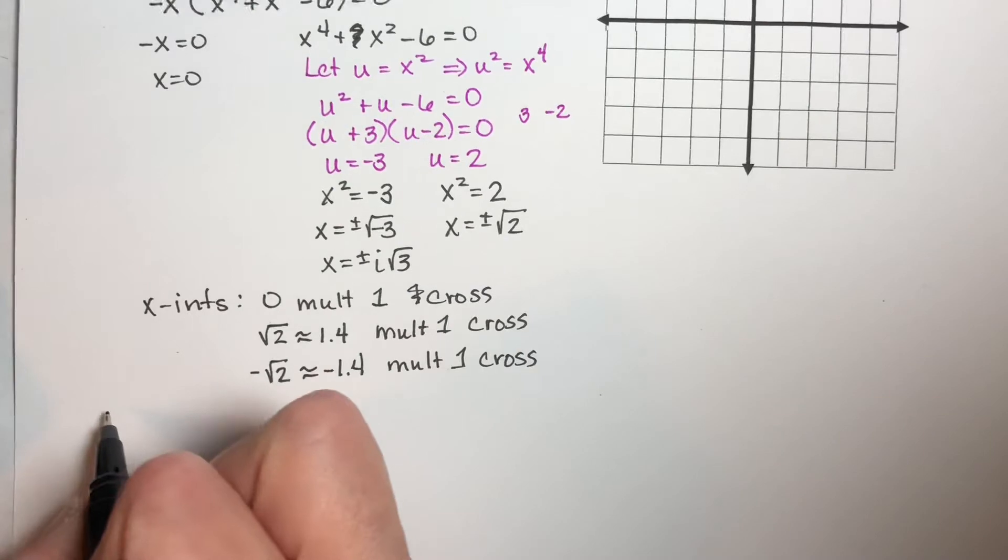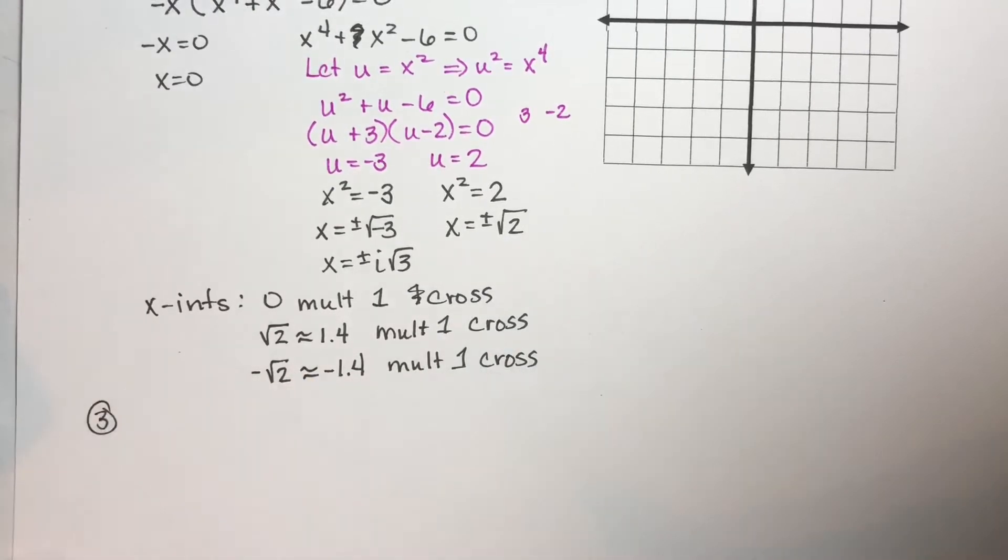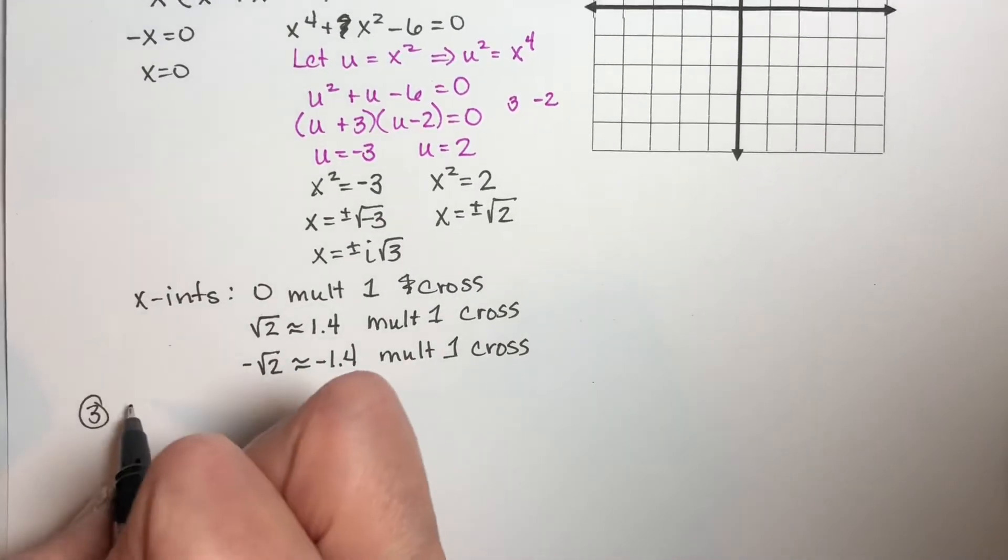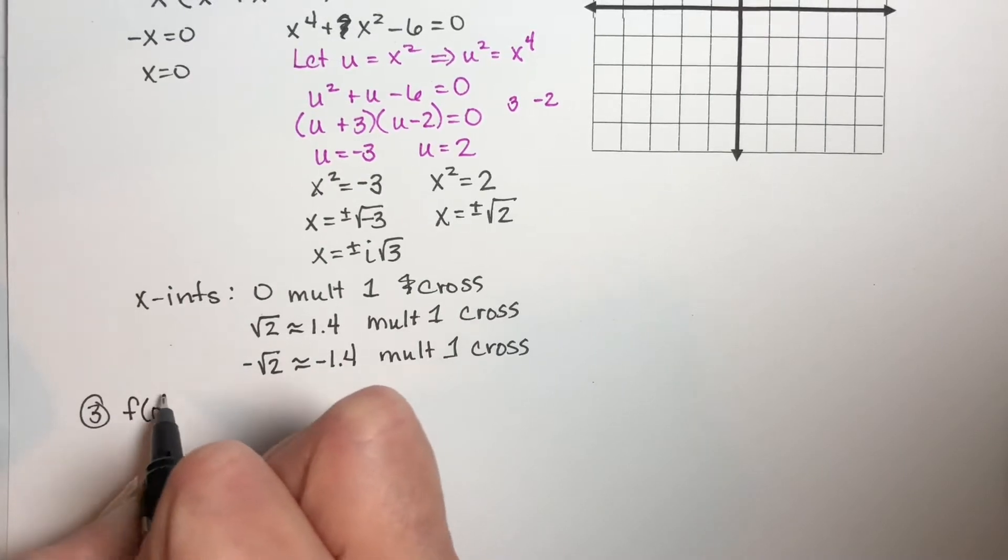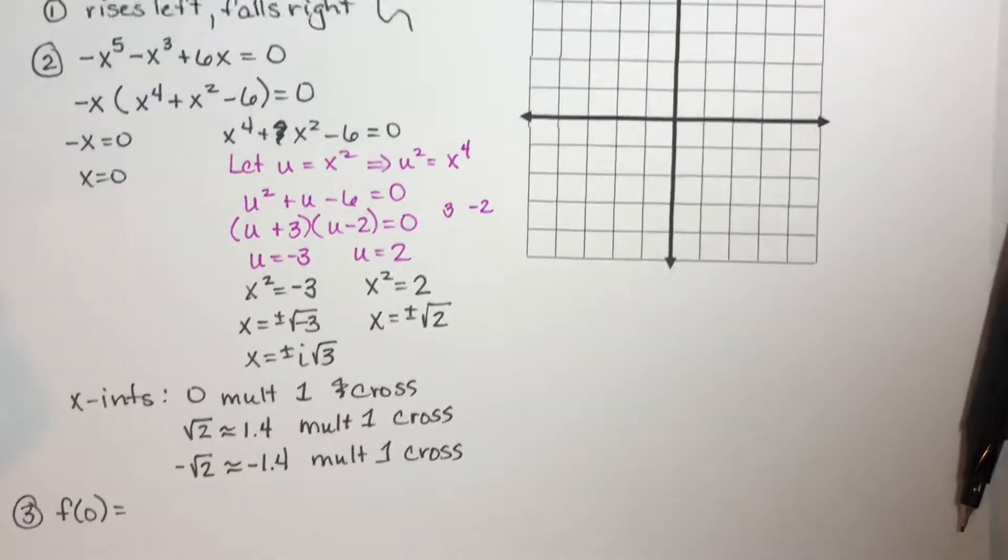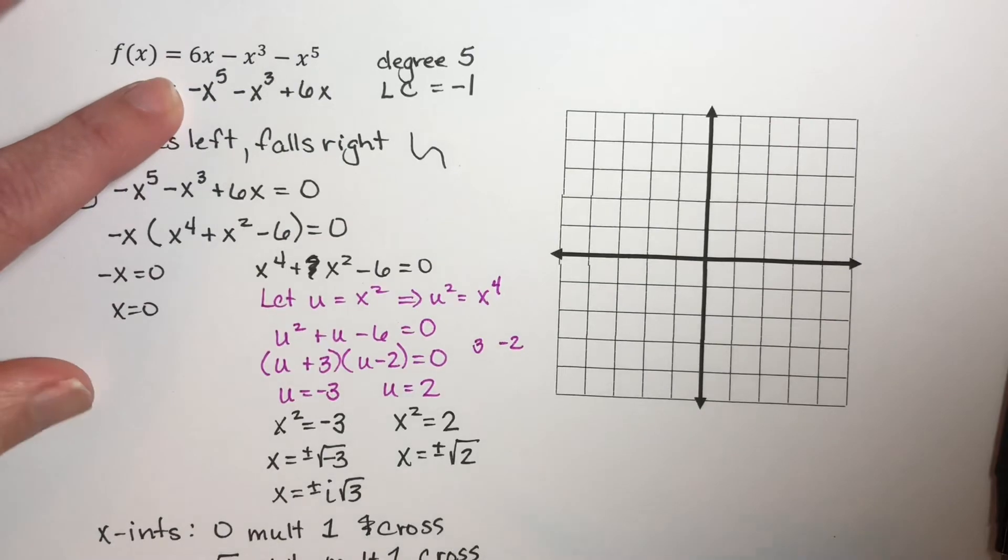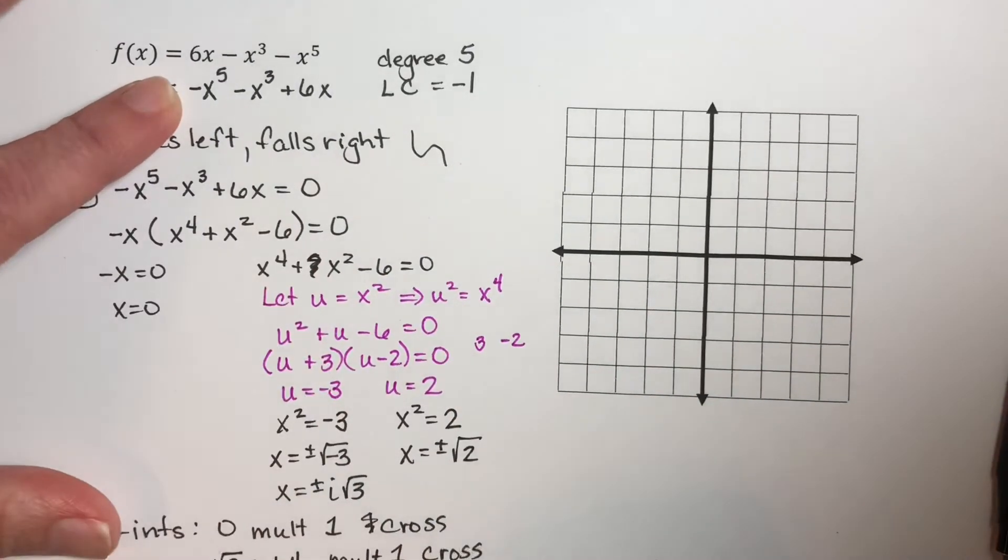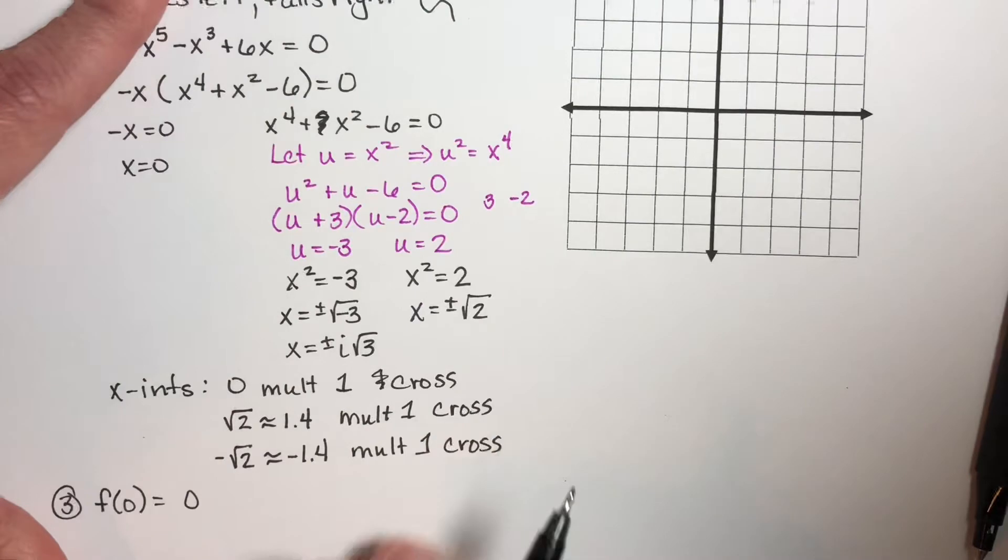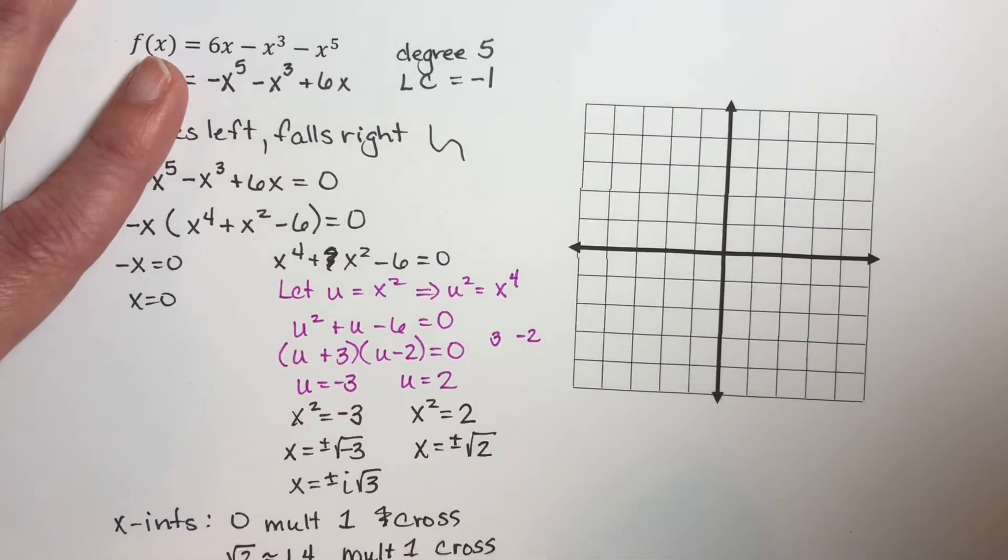So let's do part three. And three was to find the y-intercept, which means we plug in zero. So f of zero, if I plug in zero up here, six times zero is zero. I'm keeping track down here.